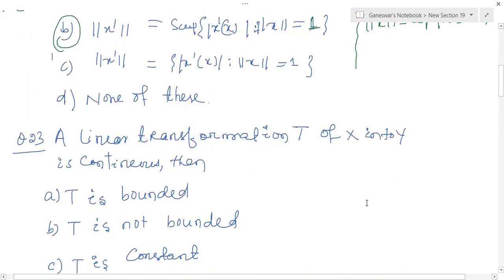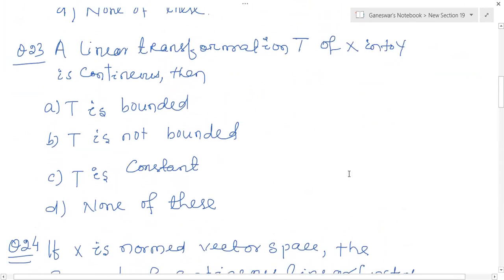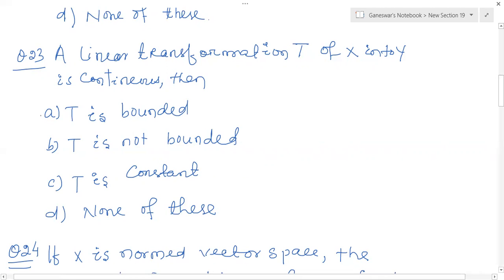Just come to question number 23. A linear transformation T from X into Y is continuous, so it is bounded — T is a bounded sequence. From the definition it is clear that T is a bounded sequence.